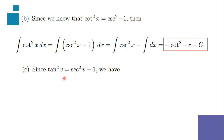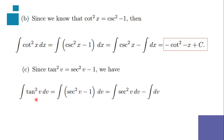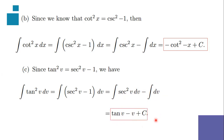For the third example, we recall the identity that tangent squared v equals secant squared v minus 1. The given is the integration of tangent squared v dv. Applying the identity, it becomes the integration of (secant squared v minus 1) dv. We integrate each term: the integration of secant squared v dv minus the integration of dv. The integration of secant squared v is tangent v, and the integration of dv is v. Our final answer is tangent v minus v plus C.